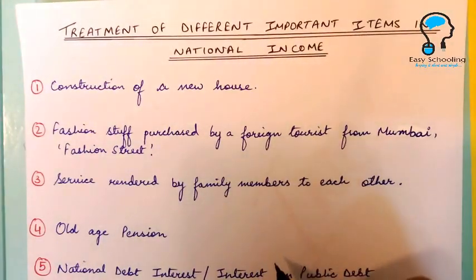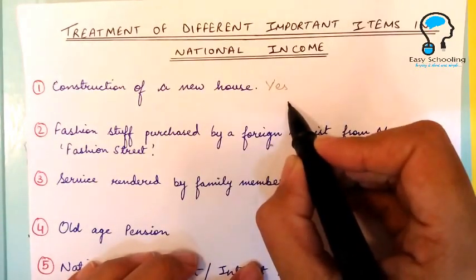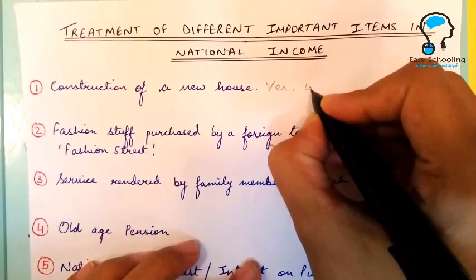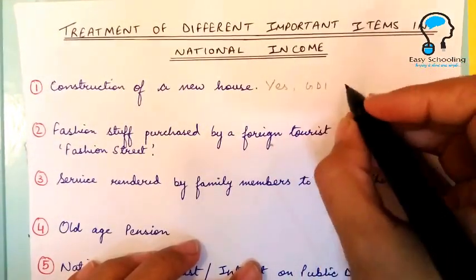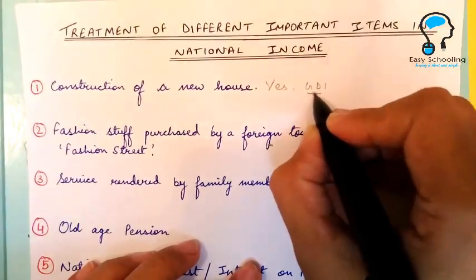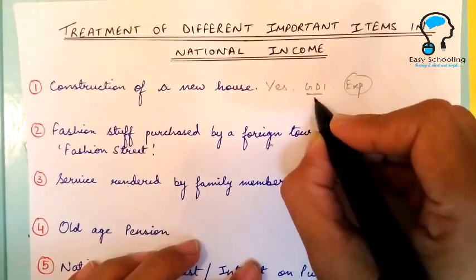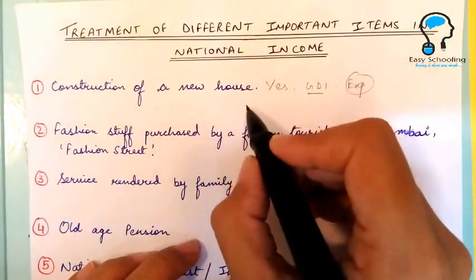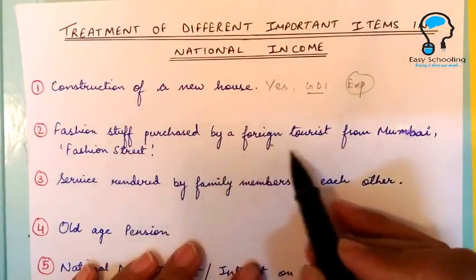First one is construction of a new house. Yes, it will be included in the national income because it is a part of capital formation. It will be included in gross domestic investment. It is capital formation and it leads to the production of goods and services. This will be included in the expenditure method when we add investment.